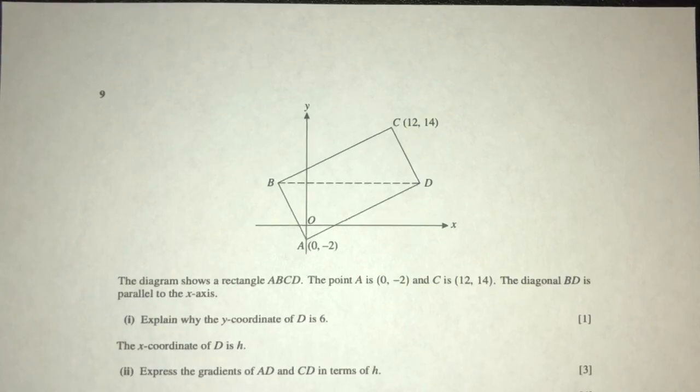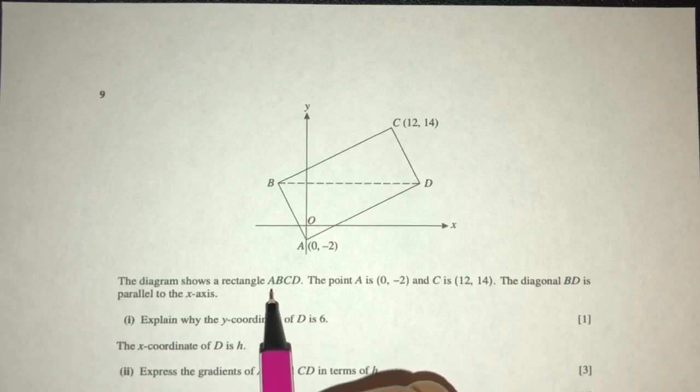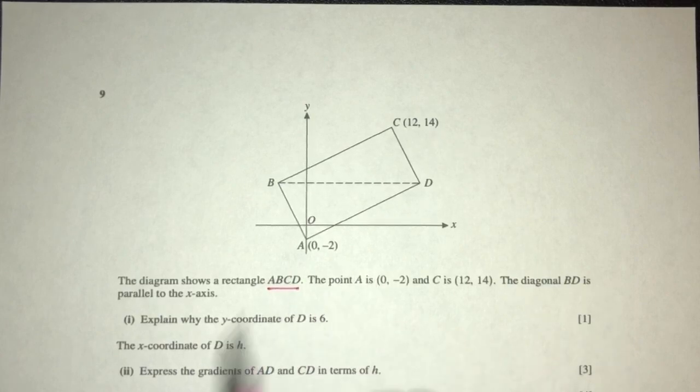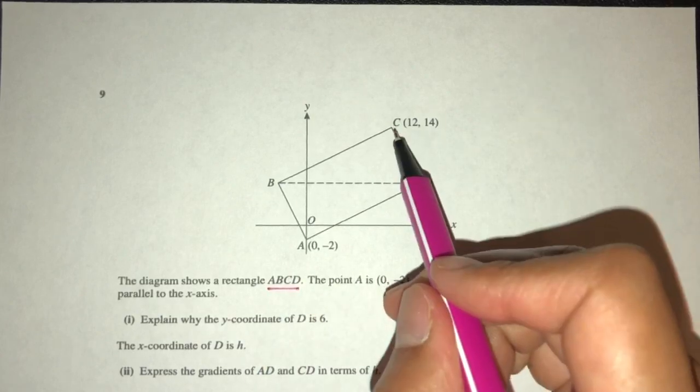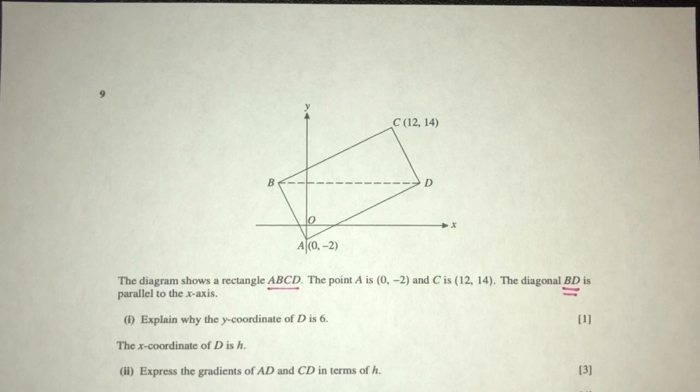Let's move on to the next question. Here we have a shape. The diagram shows a rectangle ABCD. The point A is given to you by 0, -2, and the point C is 12, 14. Now, the diagonal BD is in the same direction as the x-axis, same direction. Great to know. It is horizontal.